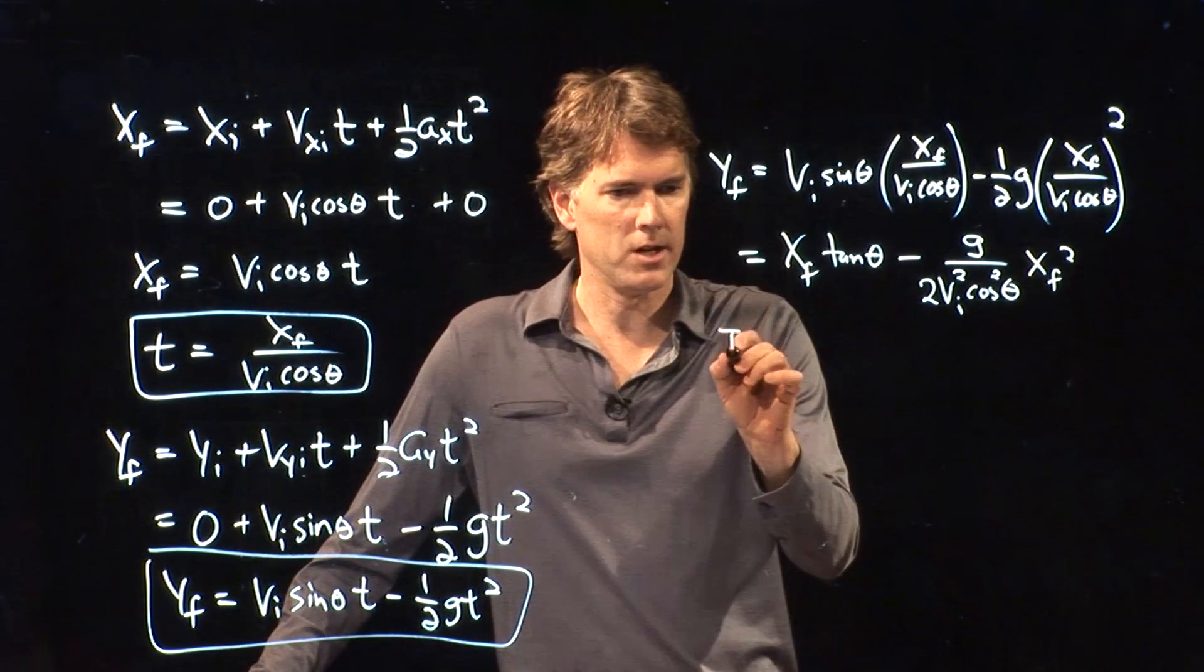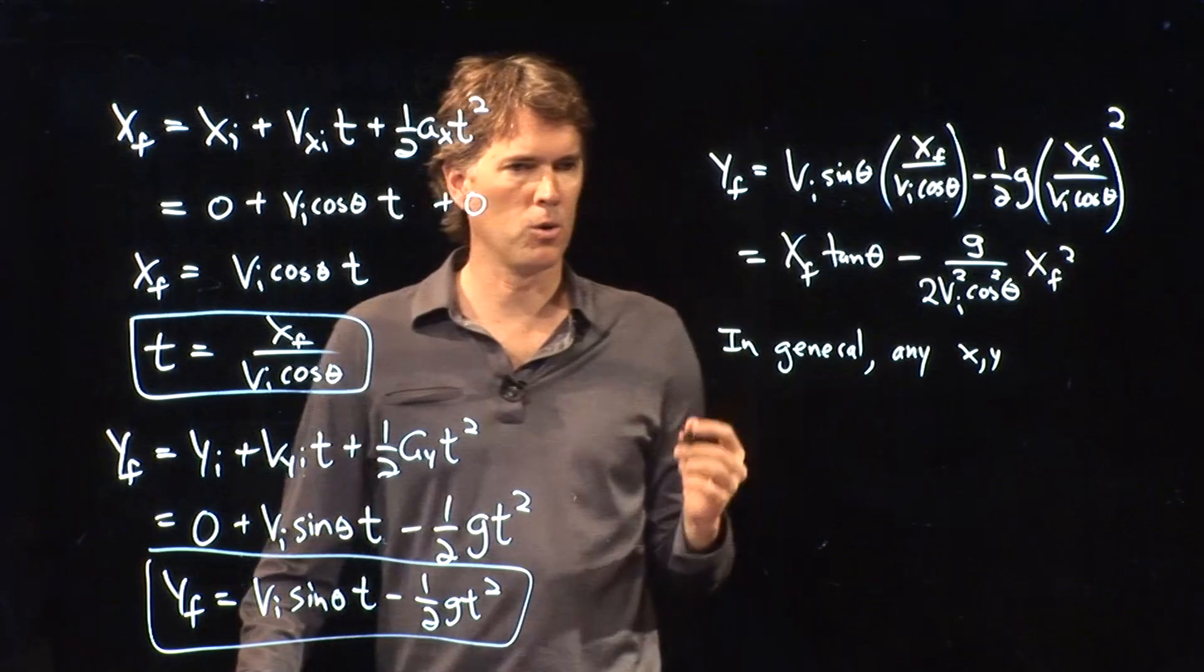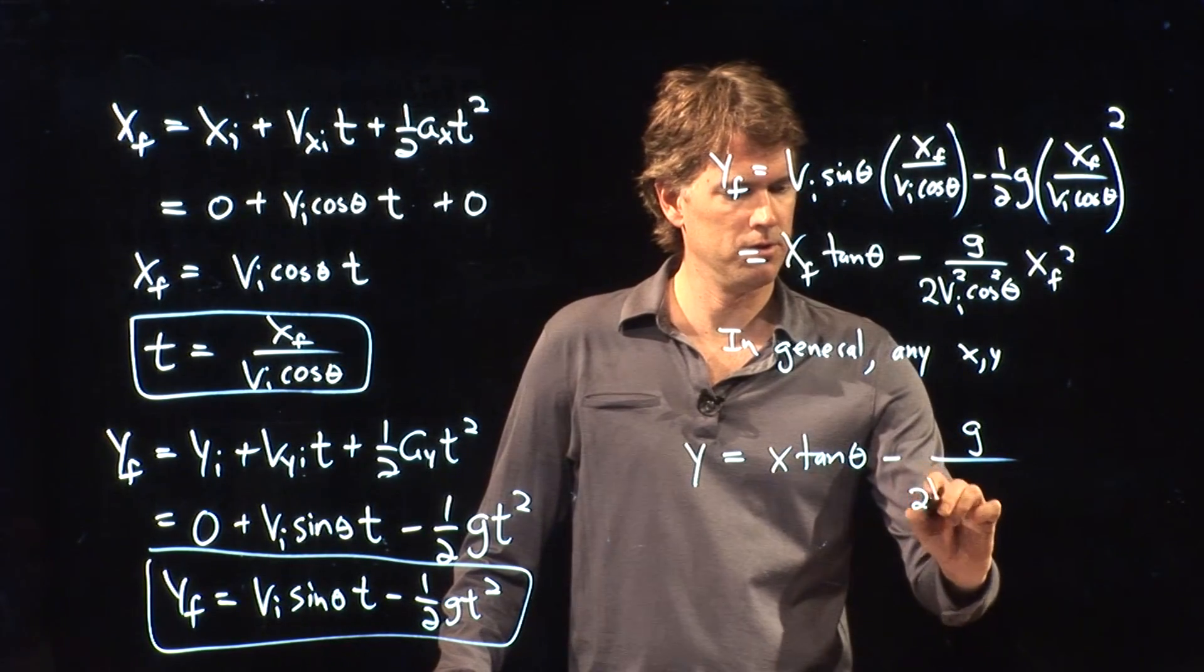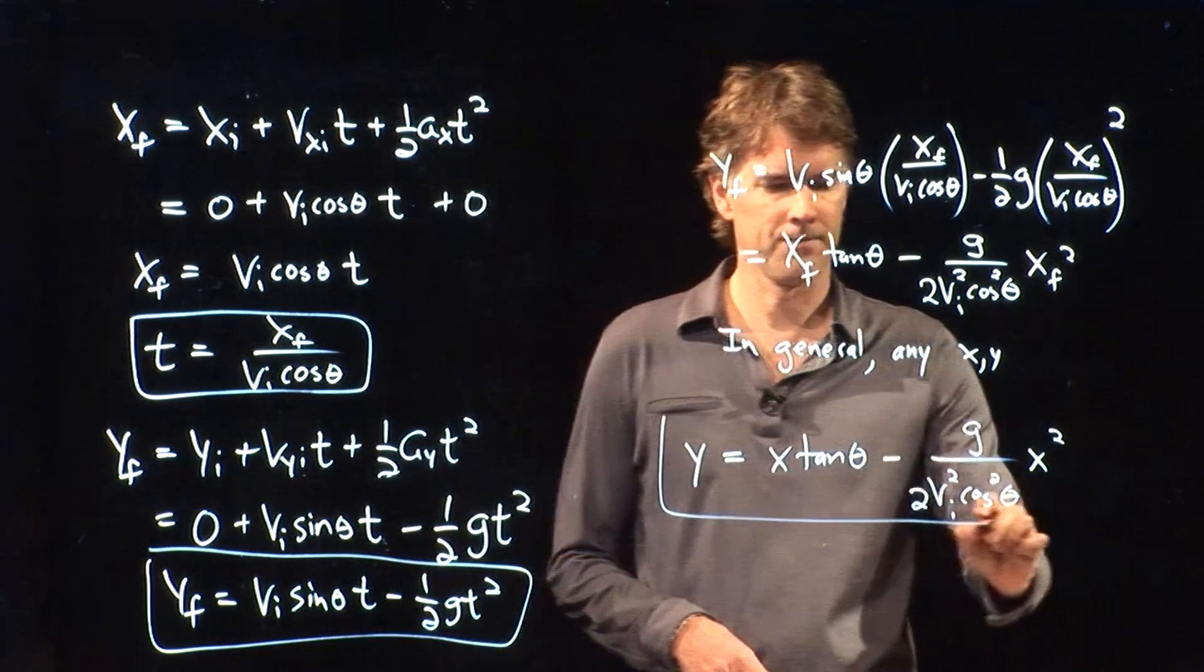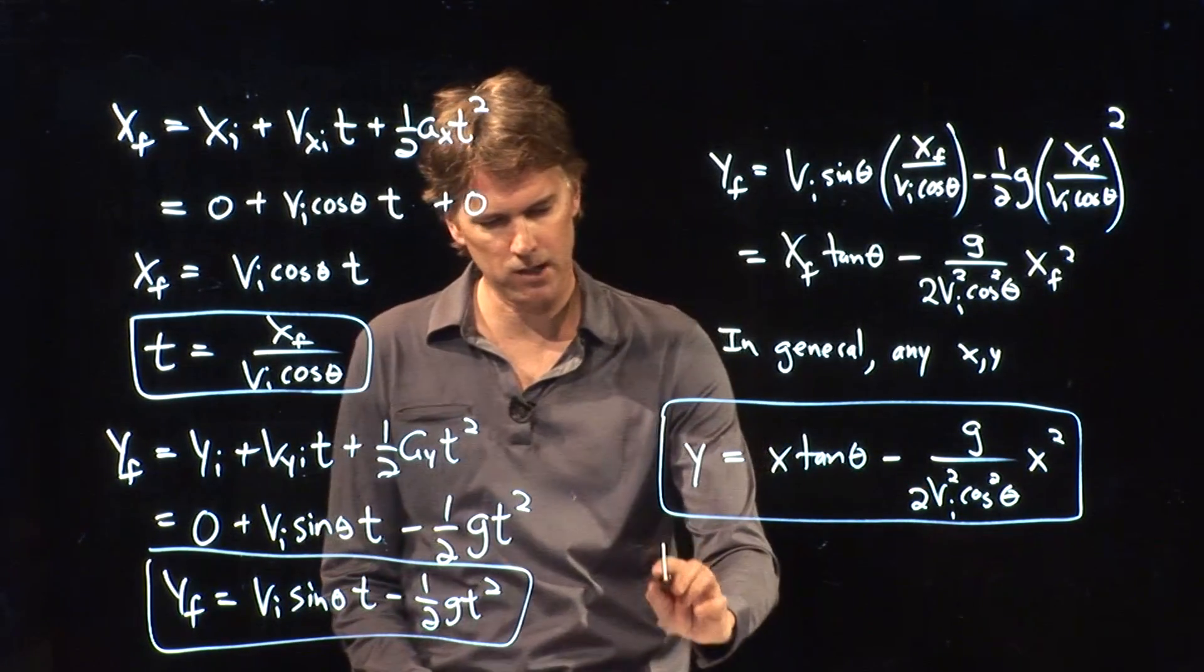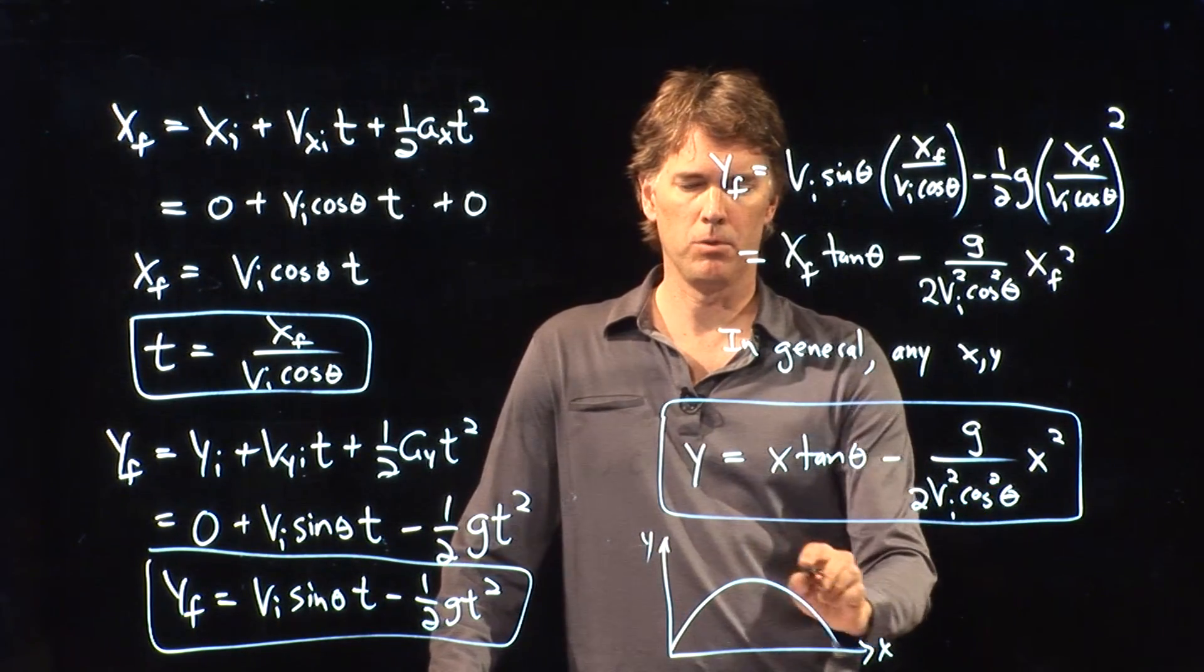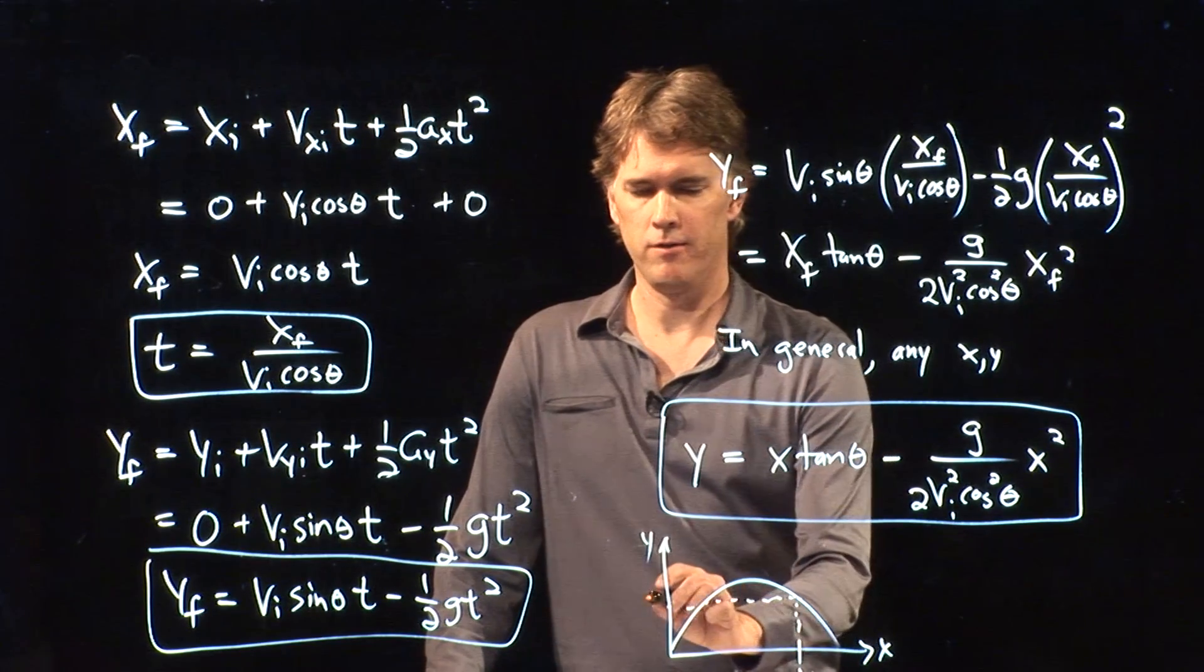So in general, for any x and y, we have an equation for the projectile that is the following. y equals x tangent theta minus g over 2 vi squared cosine squared theta times x squared. And this is a very nice equation because now there's no time in it anymore. It says that if I launch a projectile, all I need to know is the starting speed and the starting angle, and everything else will be determined. I put in some x and I calculate exactly what y corresponds to for that particular x.